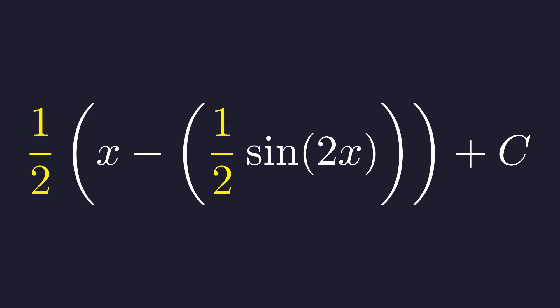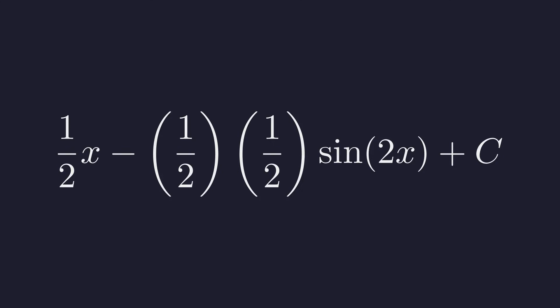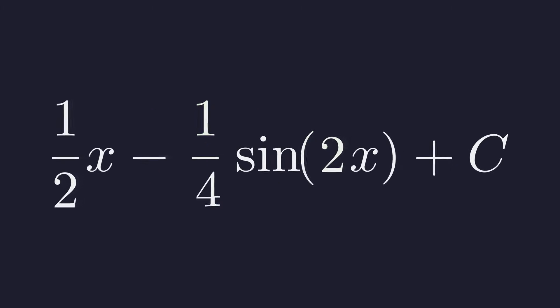To simplify, we distribute the one half across both terms inside the brackets. This gives us one half x minus one half times one half sine of 2x plus c. Finally, we multiply the two coefficients. One half times one half is one fourth. This gives us our final answer, one half x minus one fourth sine of 2x plus c.